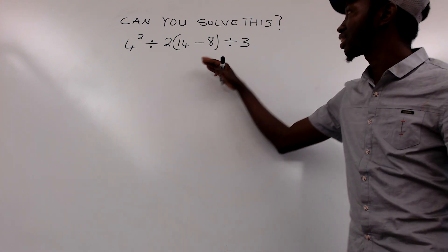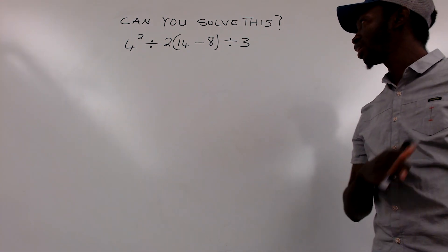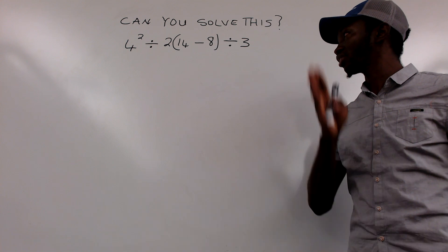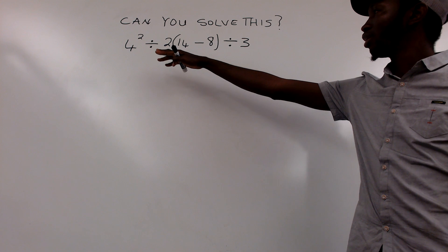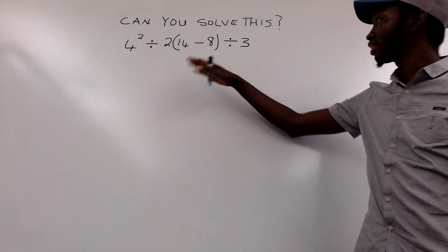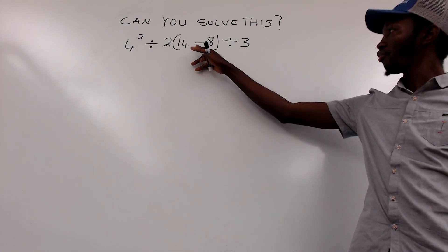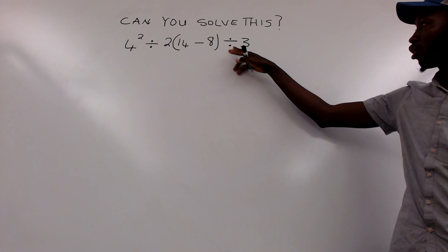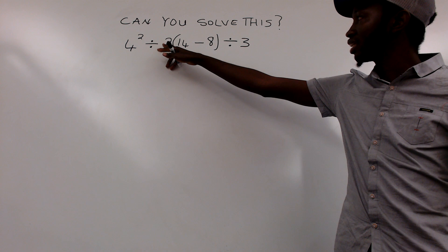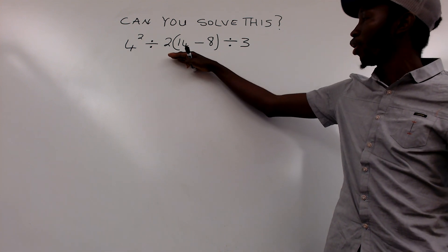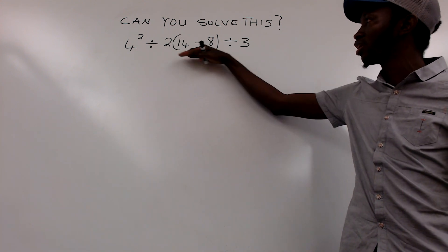The phobia you have with this type of problem, I guess just after going through this video is going to be totally eliminated. Before we solve this, we can see we have a power here — four to the power two — and we have the signs given: a division sign, a subtraction sign, and another division sign. We also have a multiplication sign within the two and the brackets, but it is not visible. We have to know that there is a multiplication sign within the two and the bracket.